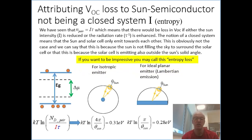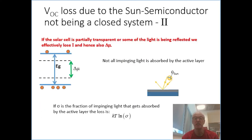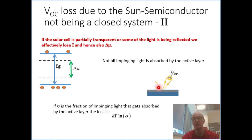The other way that we can lose is that we assume that everything that arrives at the surface of the device really goes in. But unfortunately, our device is made of a material which is not air — namely, it has a different refractive index — so it's very likely that when light comes through the air and impinges on our device, there would be reflection.